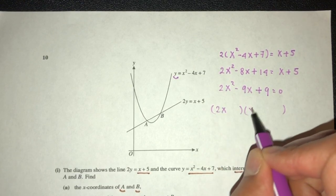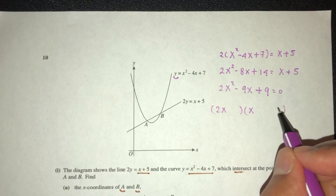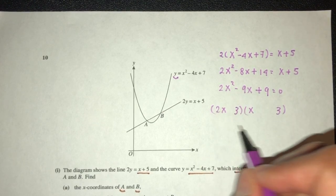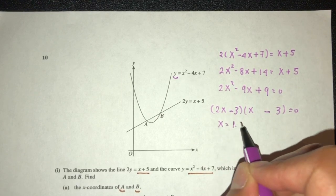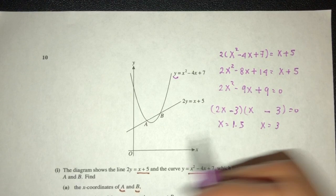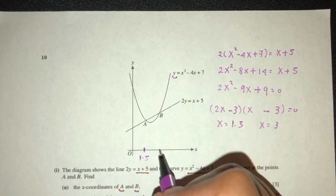That will be 2x, x, 9 is 3 times 3, right? To get minus 9, we have to have minus 6, minus 3. x will be 1.5, x will be the value of 3. This is 1.5, and this will be 3.